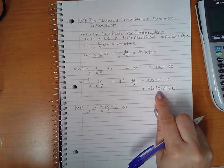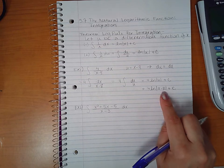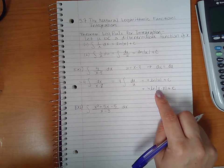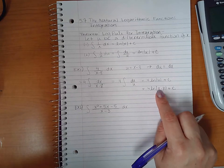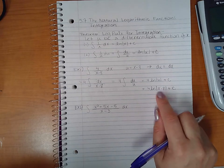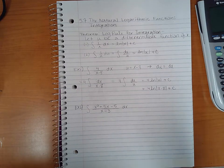Here we do need the absolute value bars because x minus 8 is not always a positive value. If x is anything less than 8, then this will be a negative number, so we do have to keep the absolute value bars on this expression.